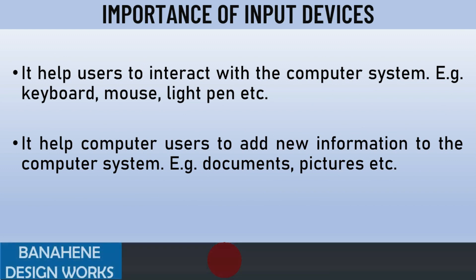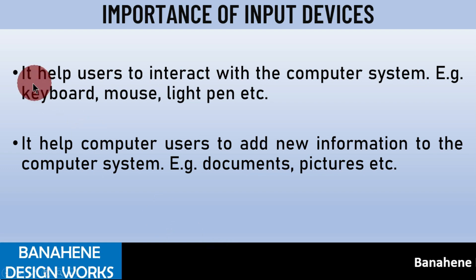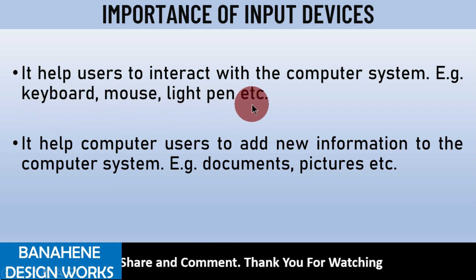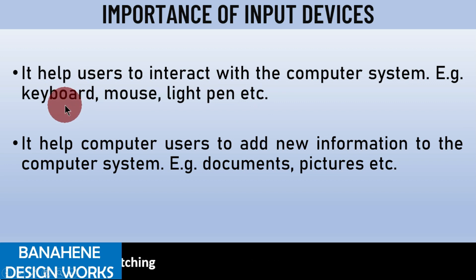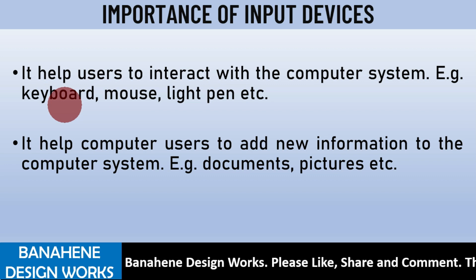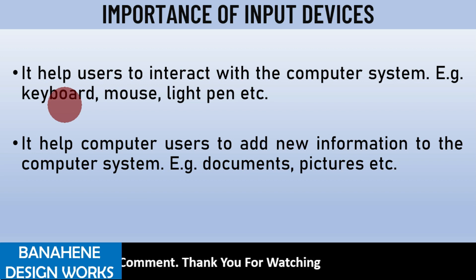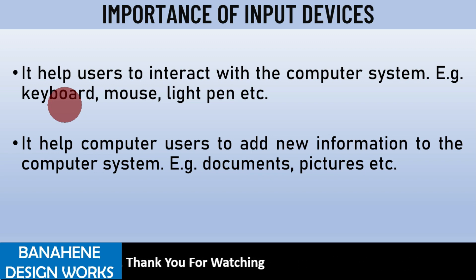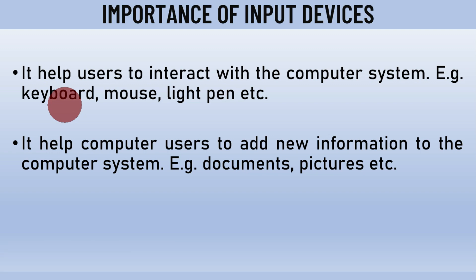The first importance is that input devices help users to interact with a computer system. Examples include the keyboard, mouse, and light pen. The keyboard helps users to input commands into the computer system by typing letters or symbols. When you press a letter like A, B, or C on the keyboard, you will see that symbol or letter on the computer screen, confirming the command has been displayed on the monitor. This allows you to graphically interact with a computer system.